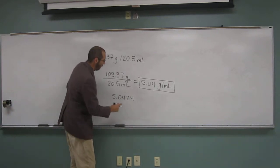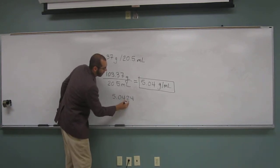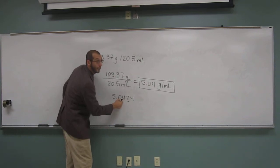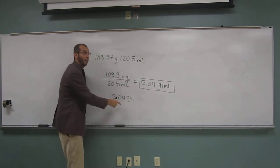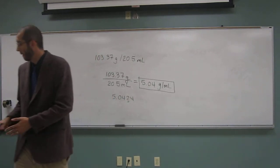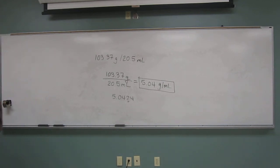Now remember this rounding rule is because this is a two, you're going to round, you're going to keep this at four. So round that thing. Any questions on this one? Grams per milliliter.